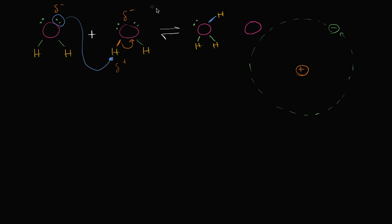So this character over here is going to have your oxygen bonded to only one hydrogen, with its two original lone pairs, and then it took both of the electrons from this covalent bond, so it has another lone pair. This molecule gained just a proton without getting any electrons, so it now has a net positive charge. And this molecule over here lost a proton without any other changes, so it now has a negative charge.